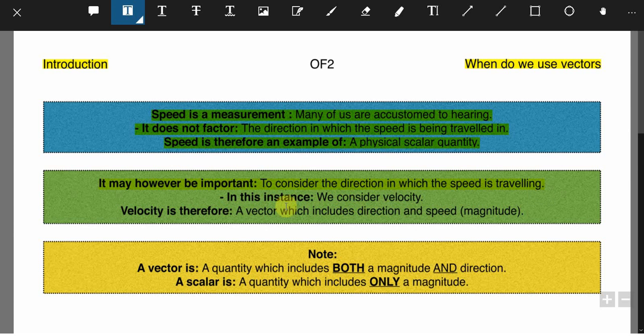So in this instance we consider velocity. Velocity is therefore a vector which includes direction and speed, and speed is the magnitude.